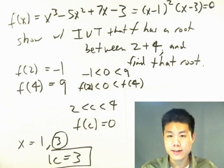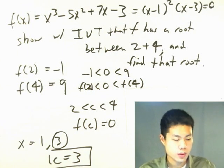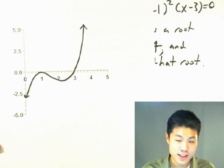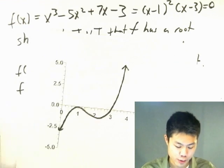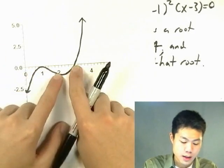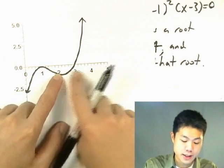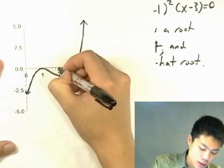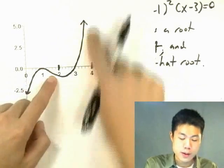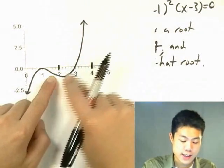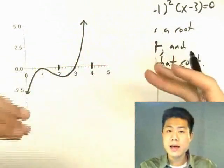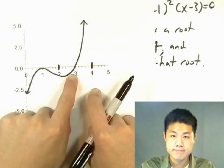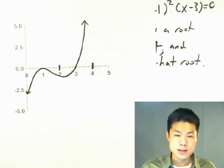That's how we apply the Intermediate Value Theorem — it's a guarantee that we're going to find at least one root. Here's a graph of that function. You can see that we have a root at x = 3. It is guaranteed that there's a root between 2 and 4. 2 is negative, 4 is positive, so therefore the graph has to cross through the x-axis somewhere, and it does so at c = 3. That's the theorem.